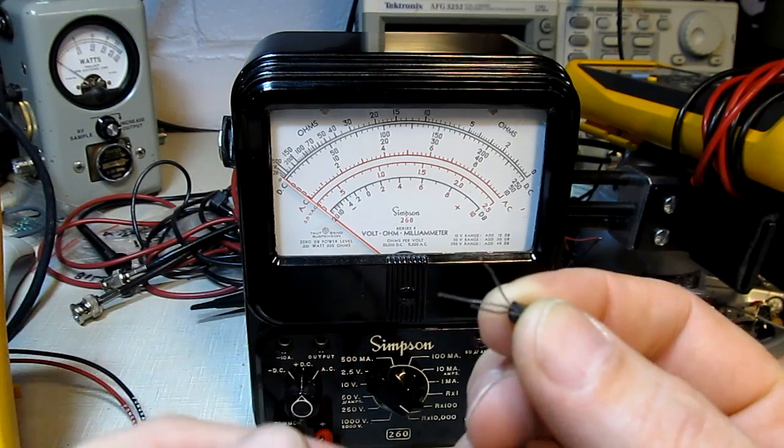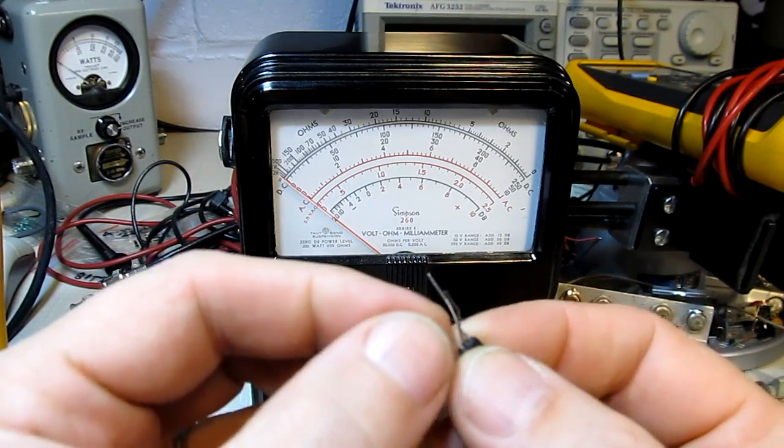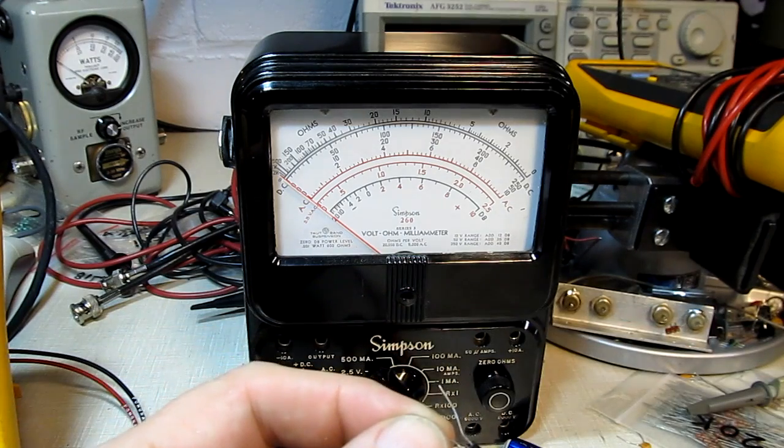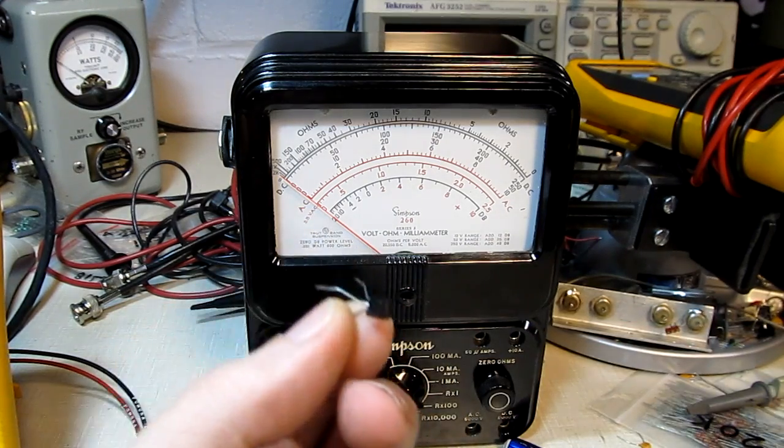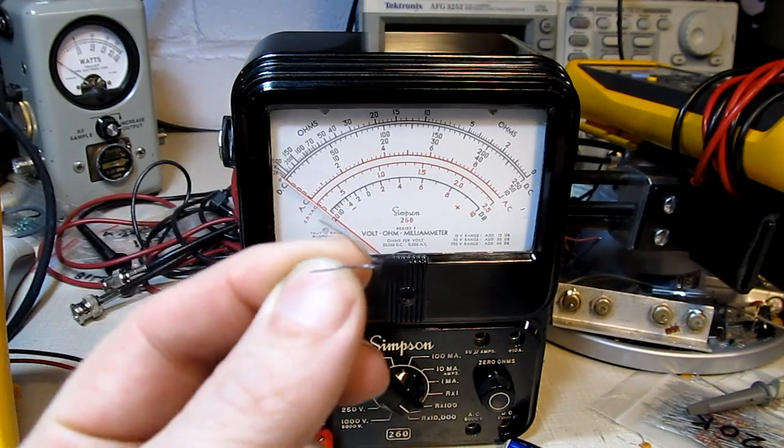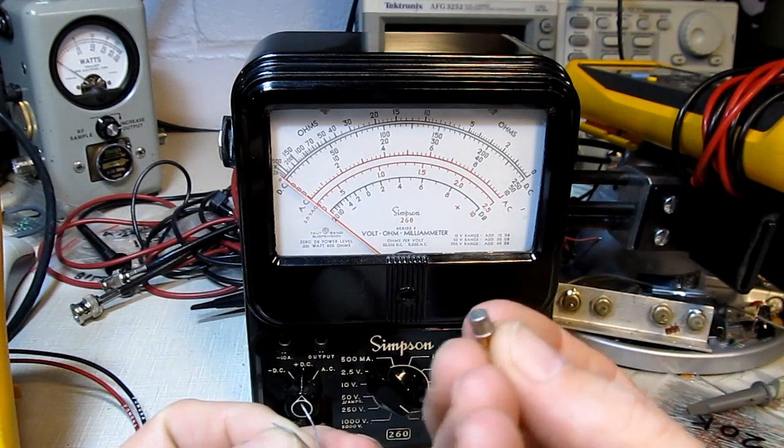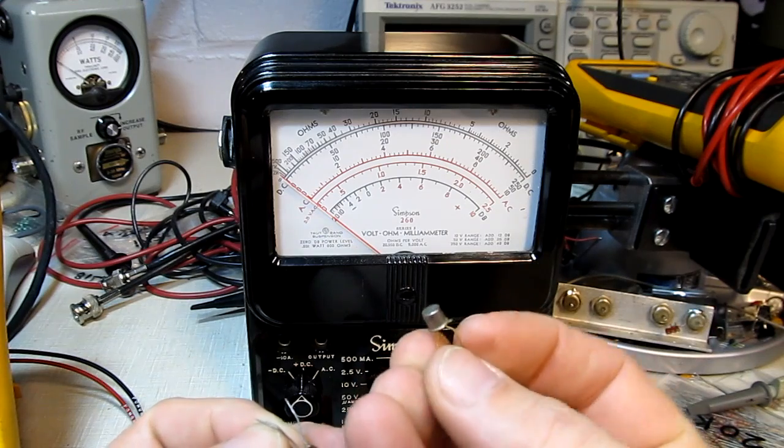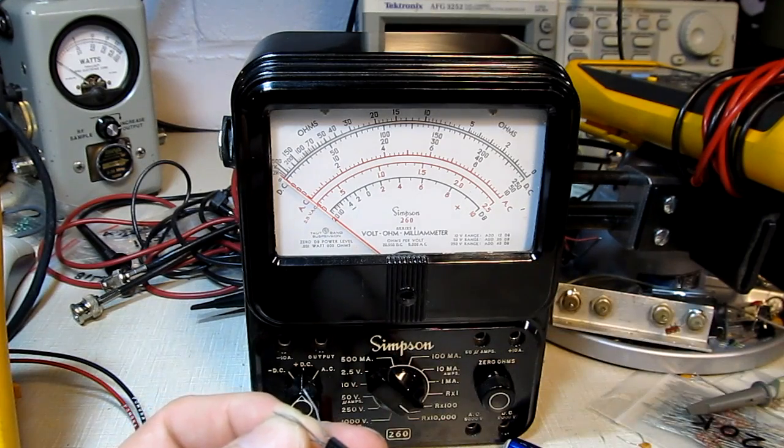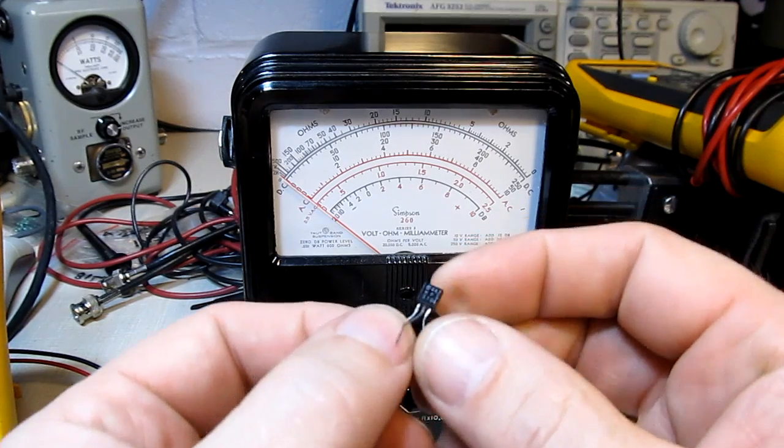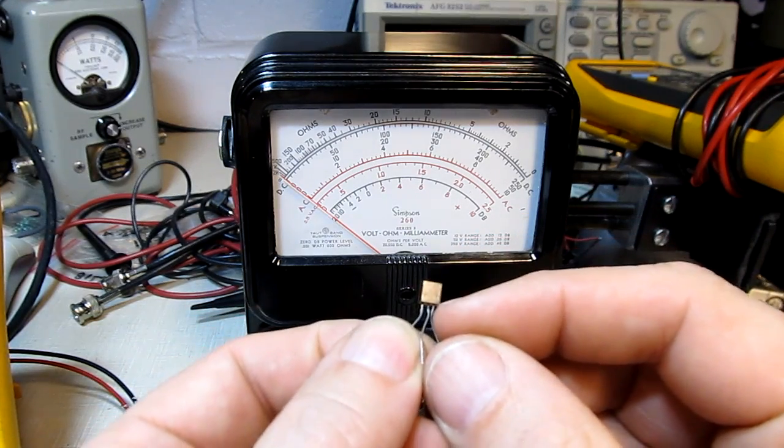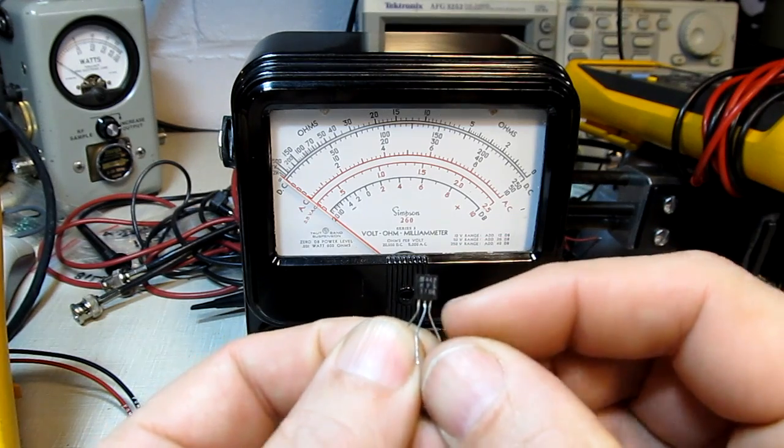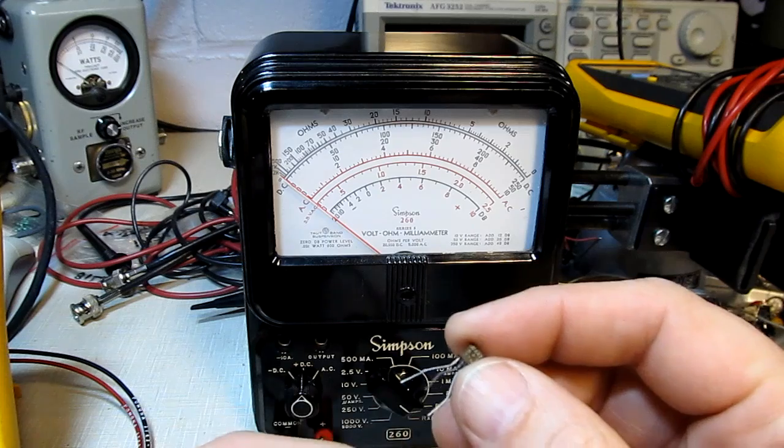To know which lead is the base collector or emitter and that will vary by package type whether we're talking about like a TO92 package like this plastic transistor here or a metal TO46 or a surface mount device or whatever. So it's always helpful to take a look online take a look at the part number that's on the part and try to verify what the pinout is.